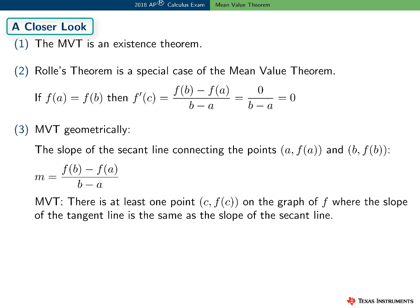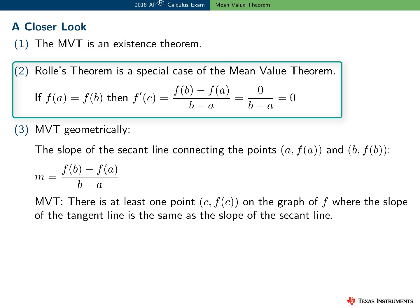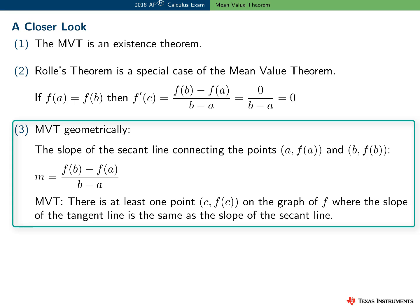Let's take a closer look at this theorem. First, the MVT is an existence theorem. Similar to the intermediate value theorem, the extreme value theorem, or Rolle's theorem, it guarantees the existence of a value c with a certain property — but it doesn't tell you how to find it. Rolle's theorem is really just a special case of the MVT: if f of a equals f of b, then there must exist a c such that f prime of c equals zero. We can interpret the MVT geometrically: the slope of the secant line connecting the points a, f of a, and b, f of b, is given by that expression, so the MVT says there is at least one point c, f of c, on the graph of f where the slope of the tangent line equals the slope of the secant line.